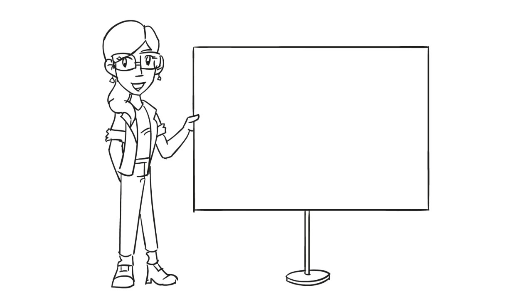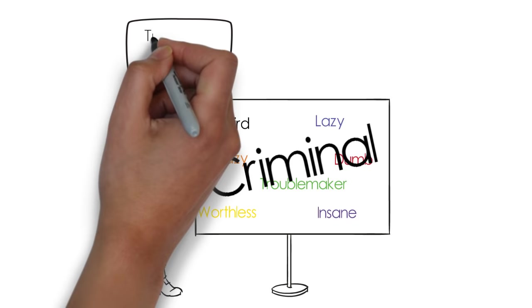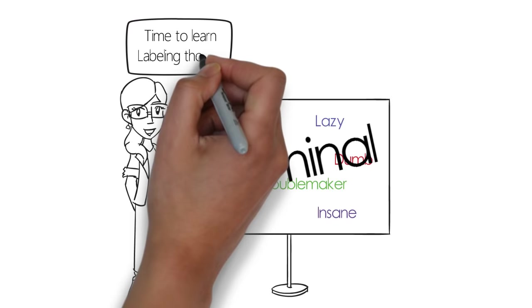Labels. We give people a number of labels based on who we think they are, which is based on what society tells us is important. The labels we give to a person determine how we interact with them. This includes what we believe is deviant and criminal.